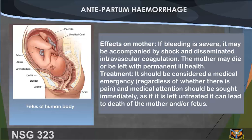Effects of APH on the mother: if bleeding is severe, it may be accompanied by shock and disseminated intravascular coagulation; the mother may die or be left with permanent health damage. Treatment should be considered a medical emergency regardless of whether there is pain, and medical attention should be sought immediately. If left untreated, it can lead to death of the mother and/or fetus.